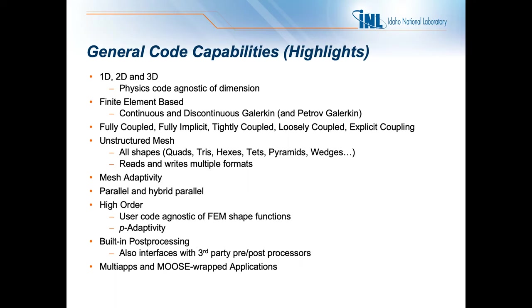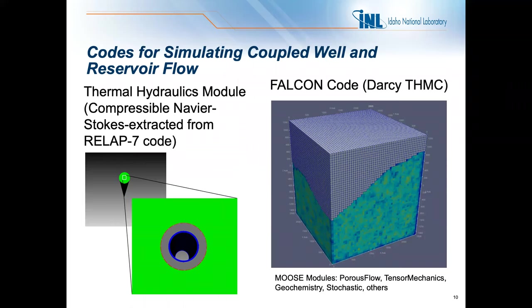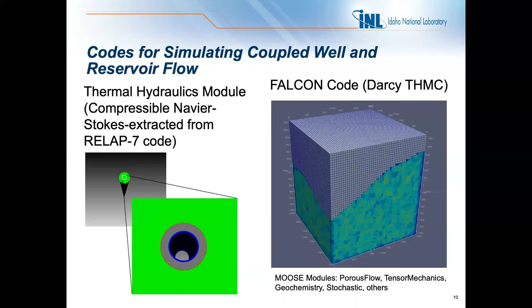For the pipe flow or flow in a well, we're using the thermal hydraulics module — THM — which solves the compressible Navier-Stokes equations. These are extracted from the RELAP7 code, a reactor design and leak detection code used for designing reactors here at INL, one of DOE's leading nuclear energy laboratories. We're able to leverage the thermal hydraulics module for use at FORGE.